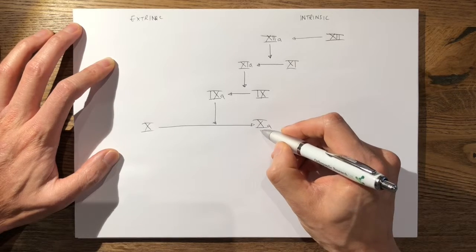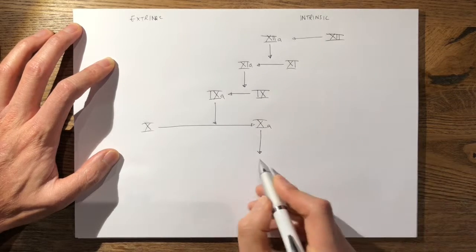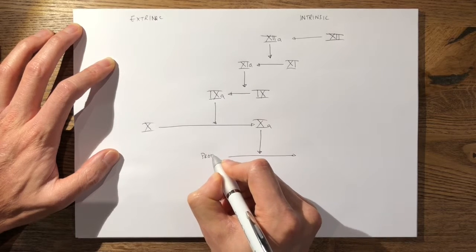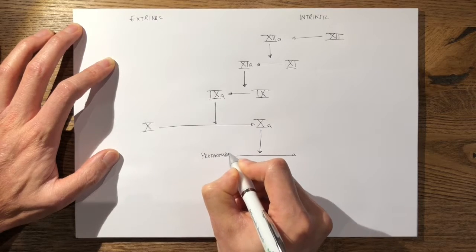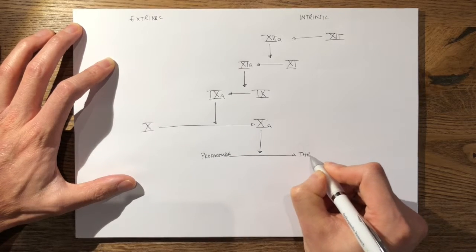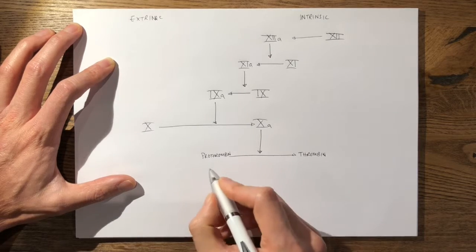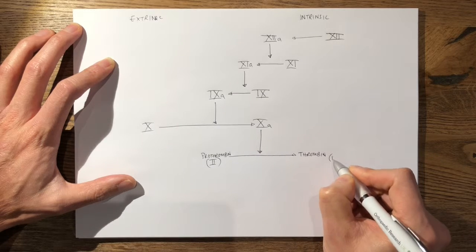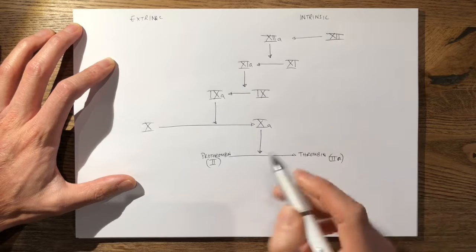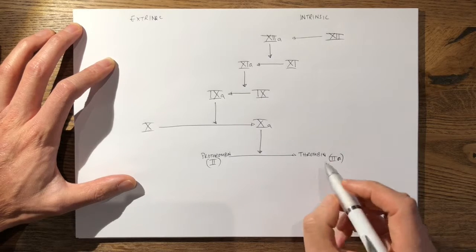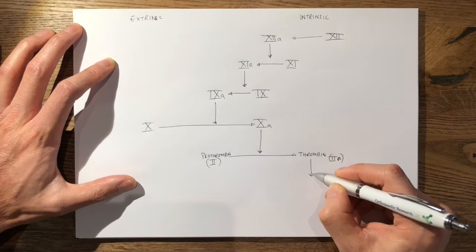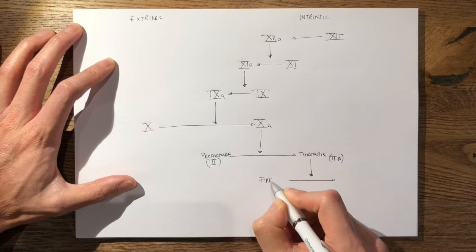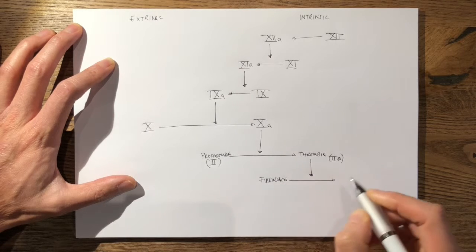Factor 10a promotes the conversion of prothrombin to thrombin. And thrombin in turn promotes the conversion of fibrinogen to fibrin.